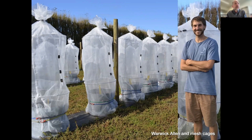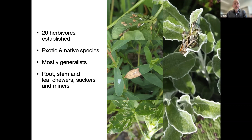Warwick led the aboveground component, giving a sense of the scale of the mesocosms. He put cages over them to contain herbivores and introduced 20 different species of herbivores — both exotics and natives, mostly generalists but with all sorts of different feeding types.